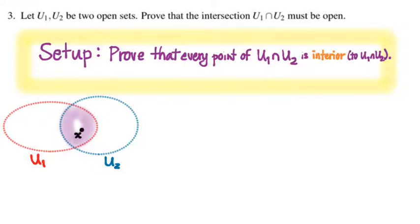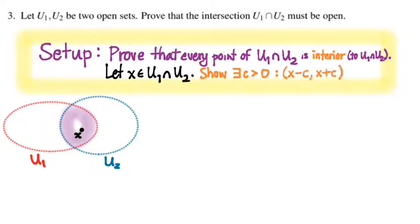So your proof will start by selecting an arbitrary point in the intersection. Let X be an element of U1 intersect U2. And remember then what you need to show is that X can stretch out its arms to some length, and those arms will remain completely within the set, namely the intersection U1 intersect U2. So you need to show that there exists a C greater than zero, such that the open interval from X minus C to X plus C is a subset of U1 intersect U2. So your job of your proof is to construct that C. How do you do it?